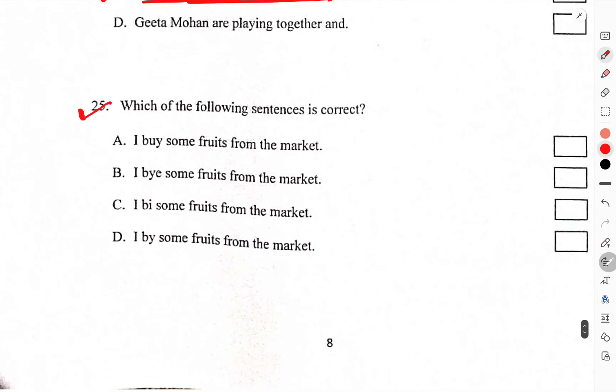Which of the following sentences is correct? I buy some fruits from the market. This one will be the correct.